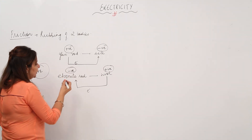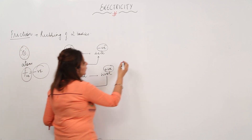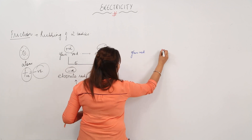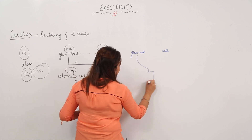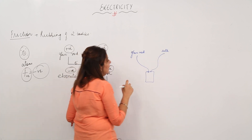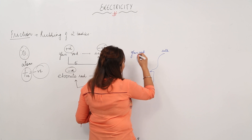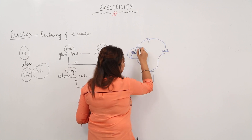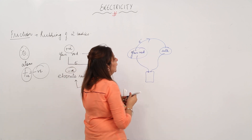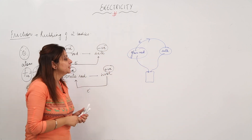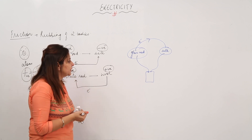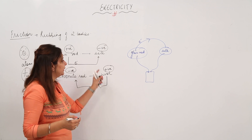Whenever you connect these charged objects to a cell or battery by means of a wire, there will be a flow of electric current. For example, if I connect a glass rod and silk via a cell, electrons flow from the glass rod to the silk — because we saw that electrons were already moving from glass rod to silk when rubbed. So this is the introduction to electricity.